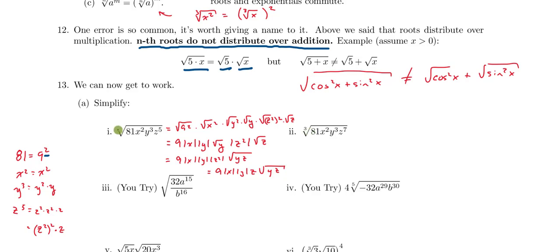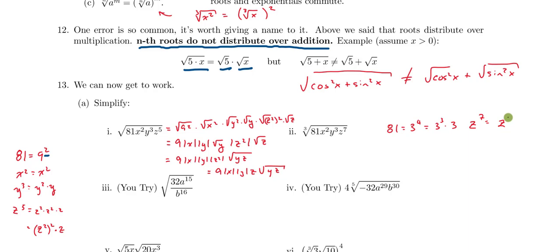Let's look at number two. In part one I was looking for all my perfect squares; here I'm going to look for all my perfect cubes. I can rewrite 81 as 3 to the fourth power, so three cubed times three. Likewise, y cubed is already a perfect cube. And z to the seventh is the same as z squared to the third power times z — since z squared cubed equals z to the sixth times z, giving z to the seventh.